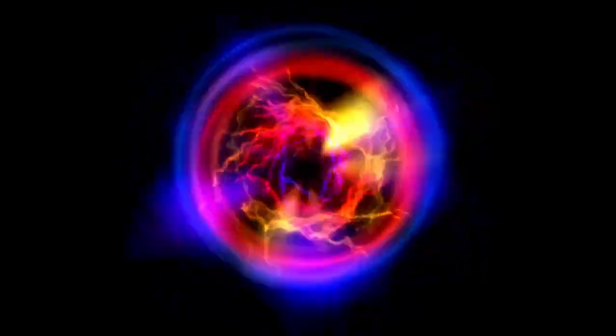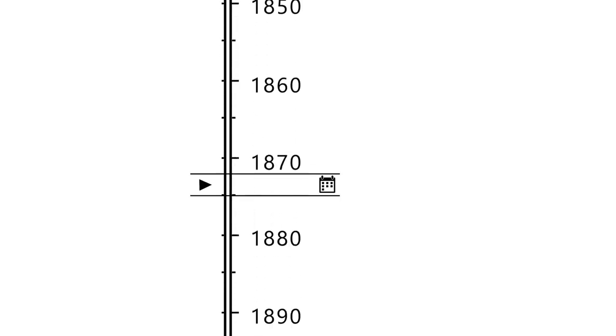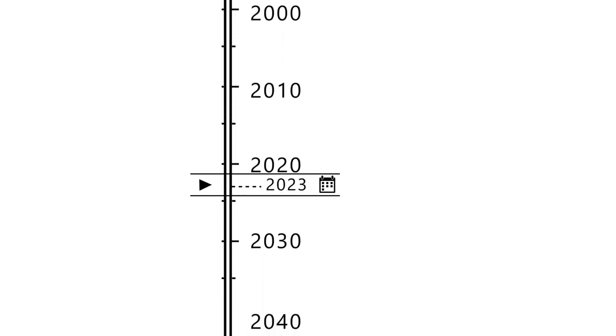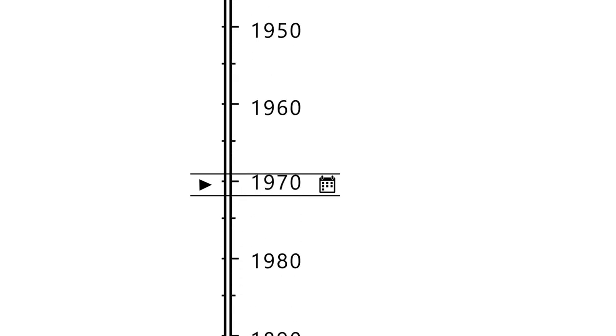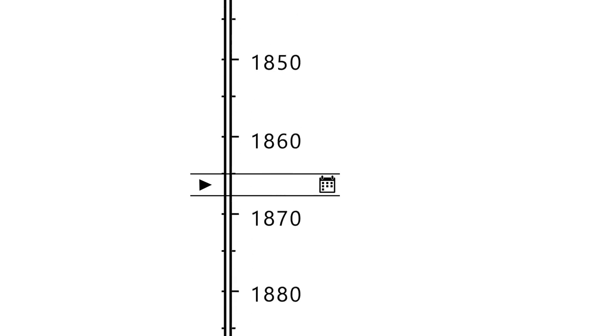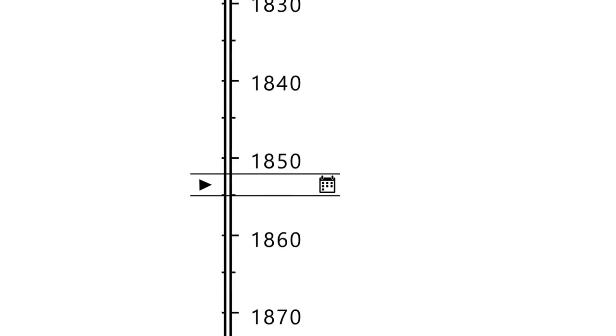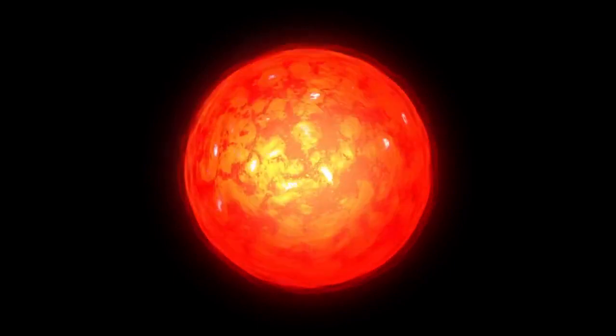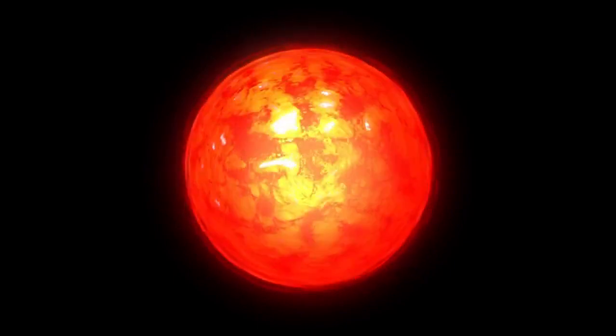Betelgeuse's distinctive reddish hue is another hallmark of its current stage. The red color is a result of its relatively cooler surface temperature compared to other stars like our sun. While the sun's surface temperature is about 5,500 Kelvin, Betelgeuse's cooler surface registers temperatures around 3,500 Kelvin.